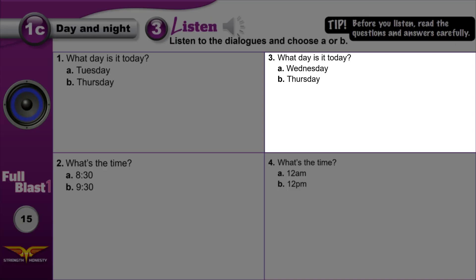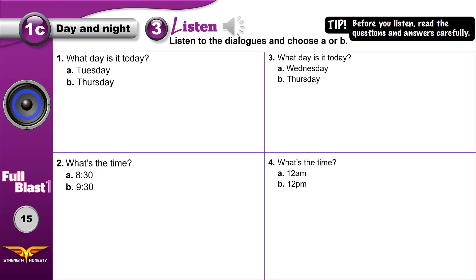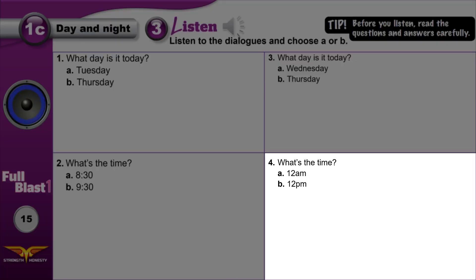Dialogue 3: It's Thursday today. It's not Thursday — it's Wednesday. Really? Yes. Oh, OK. Dialogue 4: Good morning, Karen. Good morning? You mean good afternoon. Why? What's the time? Look at the clock — it's noon. Oh, is it? Well, good afternoon then.